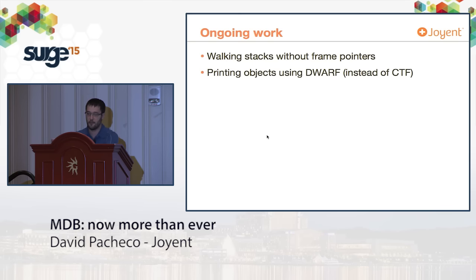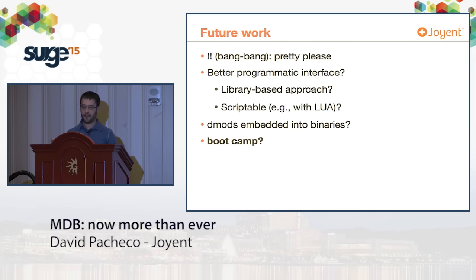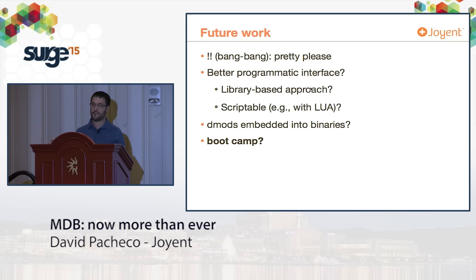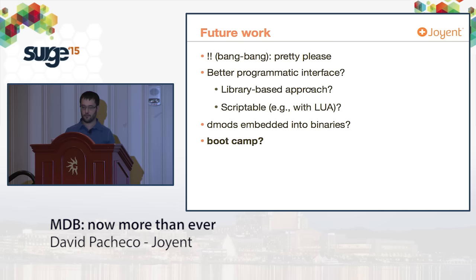Quick notes on ongoing and future work: walking stacks without frame pointers, which Patrick mentioned, is at least done as a hackathon project and getting close. We already showed printing objects using DWARF instead of CTF. We'd love to see bang-bang for piping shell output back to MDB. We're also interested in better programmatic interfaces — a more library-like interface to MDB rather than launching the full program. It would also be interesting to have more scriptable interfaces, like Lua or JavaScript, for writing algorithms on the JavaScript heap. We played with dmod embedding into binaries so Node could embed its own debugger module, though there's a security concern about running arbitrary code when opening a core file.